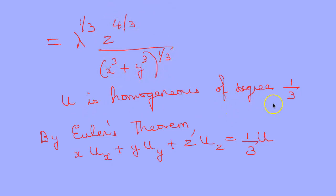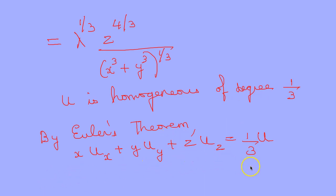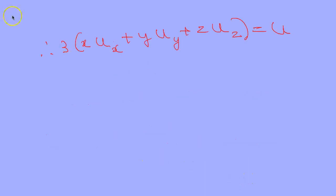So u is homogeneous of degree 1/3. By Euler's theorem, x·u_x + y·u_y + z·u_z = (1/3)·u, or equivalently 3(x·u_x + y·u_y + z·u_z) = u.